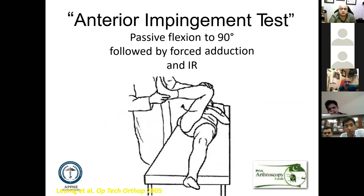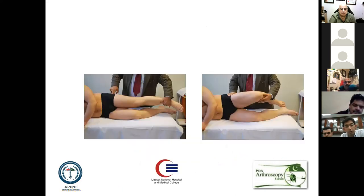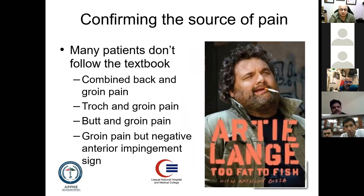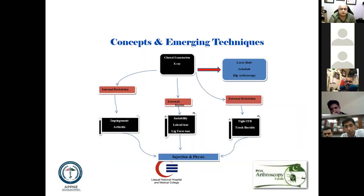For physical examination, you need to perform a few important tests: the anterior impingement test, with the hip flexed to approximately 90 degrees followed by adduction and internal rotation. You can perform Ober's test in the lateral position to evaluate IT band syndrome and whether trochanteric bursitis is a source of pain. You need to perform FABER's test to differentiate pain coming from the sacroiliac joint and the posterior side. Many patients will have a combined sort of pain, making diagnosis very difficult.